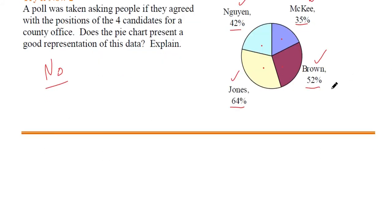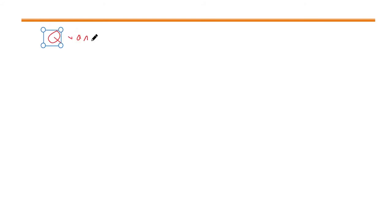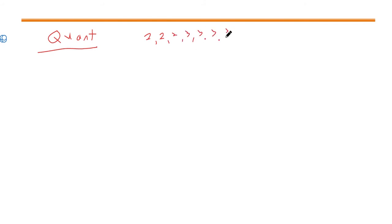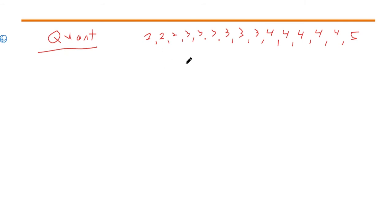Bar graphs and pie charts are how we represent qualitative data. But we also have other things for quantitative data. Remember that quantitative data represents quantities or numerical measures — like if I had the number of children in a household and sampled many households in Utah. We still want to show this in a better way than just a list of numbers. We can use frequency charts, but what we're really going to work with are histograms.